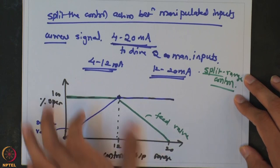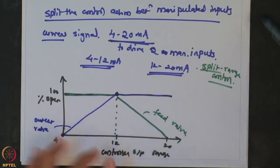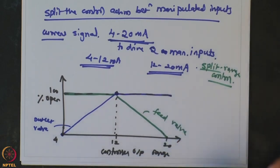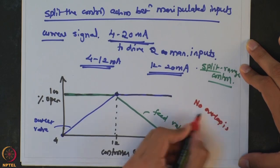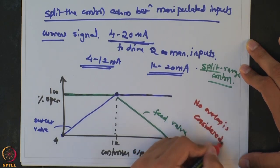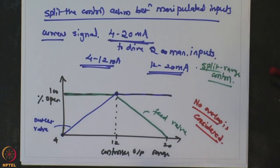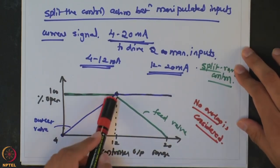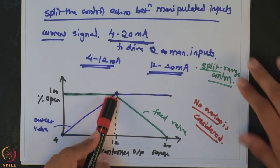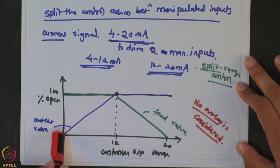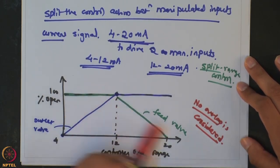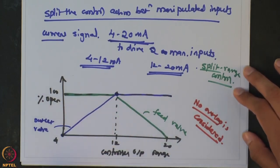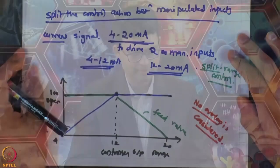We are splitting the control range between these two valves, with no overlap in this case. However, it is not necessary — we can also design with some overlap between the two actions. For example, the outlet valve may operate between 4 to 14 mA and the feed valve might cut down from 10 to 20 mA. All sorts of options are possible; this example simply shows a case without overlap.